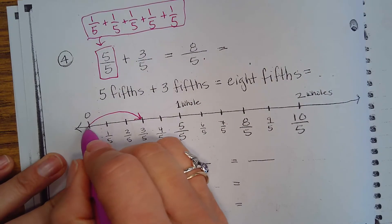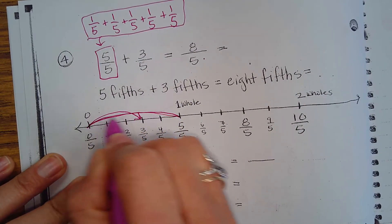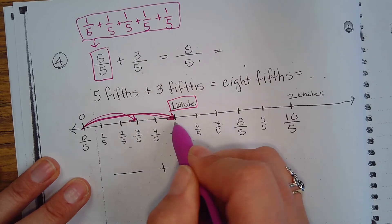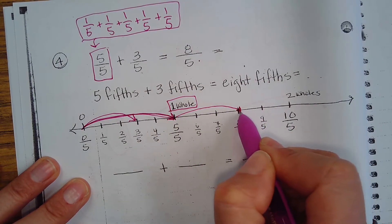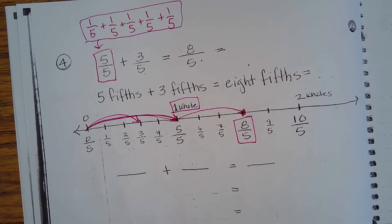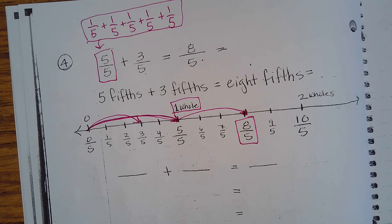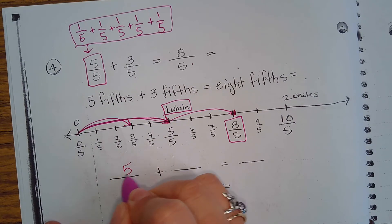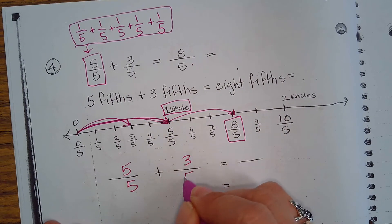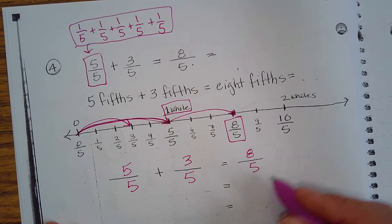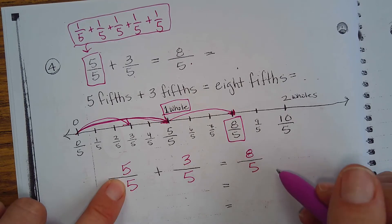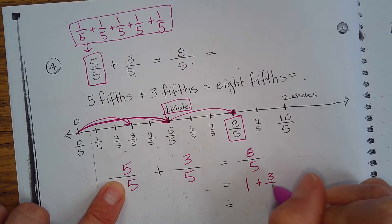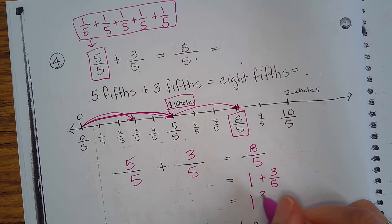If I have five-fifths and I add another — which is one whole — and I jump ahead to another three-fifths, I end up at eight-fifths. So five-fifths plus three-fifths equals eight-fifths. How many fifths are hiding in here? Five-fifths is really equal to one, plus three-fifths. So our answer is really one and three-fifths.